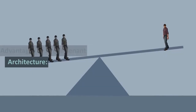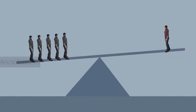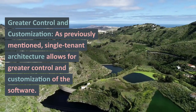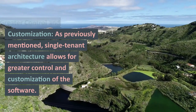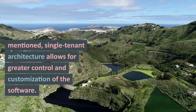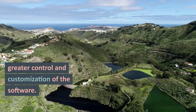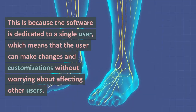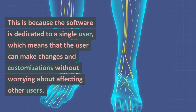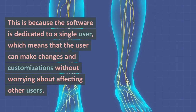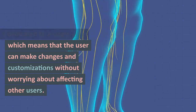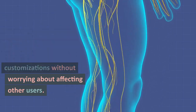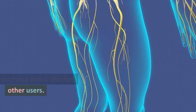Advantages of single-tenant architecture. Greater control and customization: as previously mentioned, single-tenant architecture allows for greater control and customization of the software. This is because the software is dedicated to a single user, which means that the user can make changes and customizations without worrying about affecting other users.